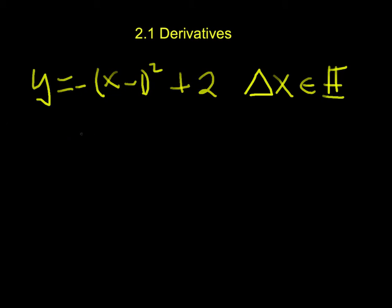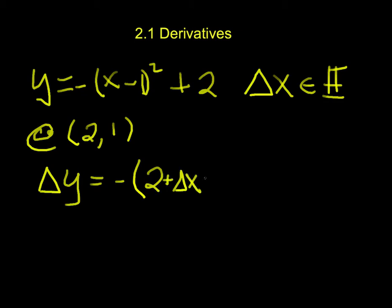So let's first off look at the point 2, 1. We'll see that the change in y, the infinitesimal change in y, will be negative (2 plus that infinitesimal, so 2 plus delta x minus 1). So right here, where we had the x, that's getting replaced with 2 plus delta x. And of course that whole thing is squared, we add 2. So that's the new point, and we'll subtract from it where we began. So minus (2 minus 1) quantity squared, and it needs to be the whole thing, plus 2.